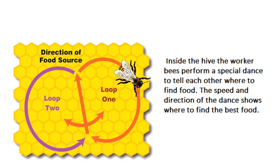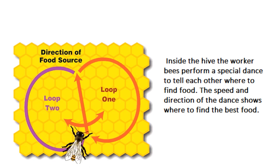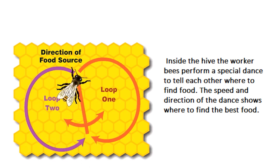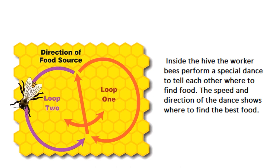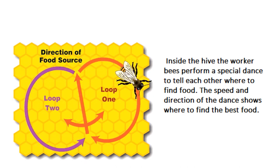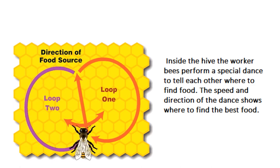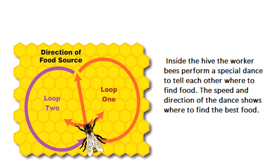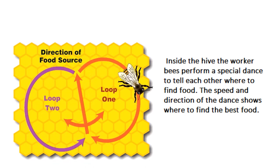Inside the hive the worker bees perform a special dance to tell each other where to find food. The speed and direction of the dance shows where to find the best food. چھتے کے اندر worker bee اگر اسے پتا چلے کہ کہیں پھول ہیں یا خوراک ہے تو وہ ایک special dance کرتی ہے جسے باقی مکھیاں سمجھ جاتی ہیں کہ کس direction میں جانا ہے خوراک حاصل کرنے کے لیے۔